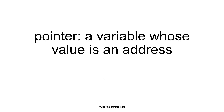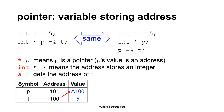What is a pointer? A pointer is a variable whose value is an address. Let's consider an example. Suppose 't' is an integer and its value is 5. It is stored in the stack memory. Compilers and operating systems decide the addresses, and the addresses are never 0. For simplicity, I assign 100 as the address of t.